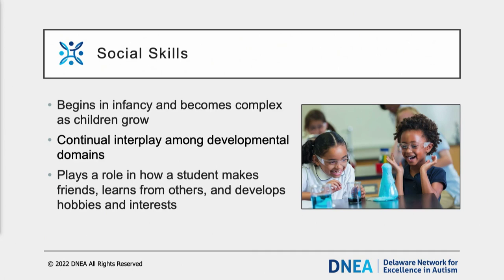A student's social emotional development includes their awareness, expression, and management of emotions, as well as their capacity to form healthy and rewarding relationships with others. Social competency does not develop independently of cognitive, emotional, and behavioral development. A student's social skills play a role in making friends, learning from others, and developing hobbies and interests, and can help a child develop a sense of belonging. Emotional development includes the ability to identify and understand one's feelings, accurately read others' emotional states, manage strong emotions, regulate one's behavior, develop empathy for others, and establish and maintain friendships.